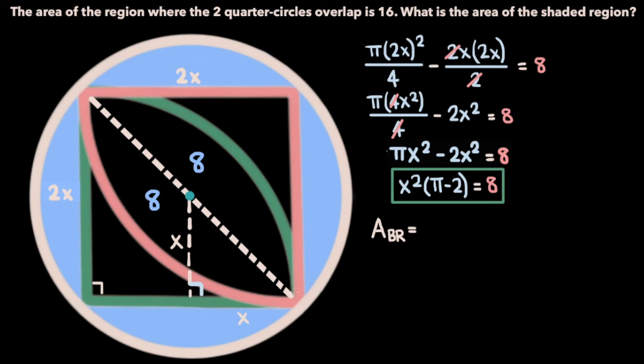Now if we apply the Pythagorean theorem on this triangle, we get x² + x² equals the hypotenuse squared, so 2x² equals the hypotenuse squared, so the hypotenuse is √2x. Now that we have the radius for the outer circle, we can write an expression for the area of the blue shaded region.